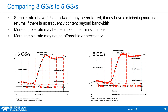All things being equal, if both signals have the same signal bandwidth and are captured on an oscilloscope with the same bandwidth, then 3 GS/s and 5 GS/s will both accurately reconstruct your signal. The only difference is that 5 GS/s won't be as affordable.